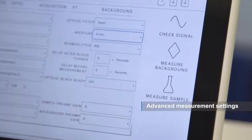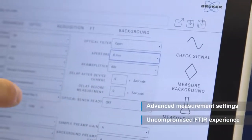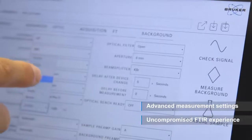Most importantly, Opus Touch is a fully fledged FTIR spectroscopic software that doesn't restrict you in any way. Choose your own settings and adapt the measurement to your needs to utilize the full potential of your spectrometer.